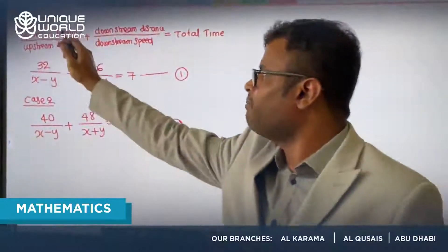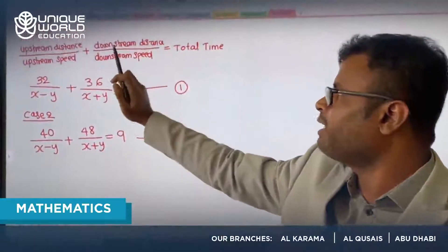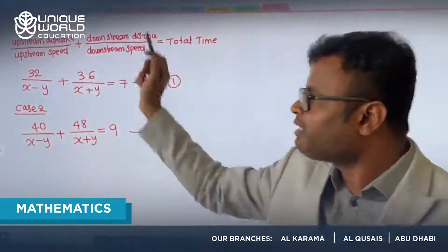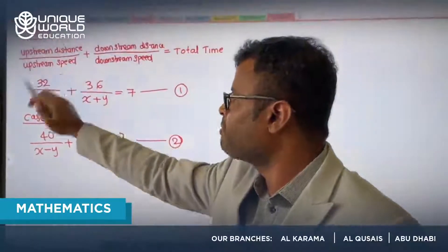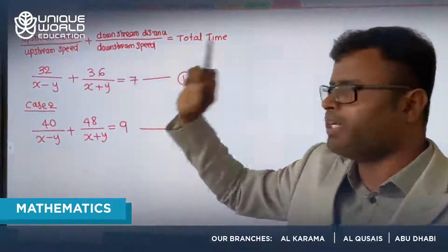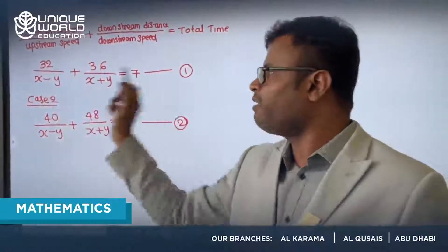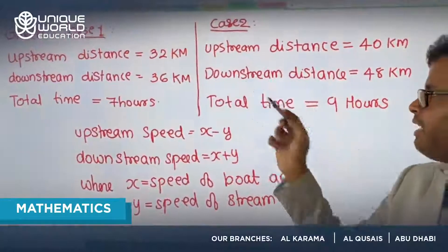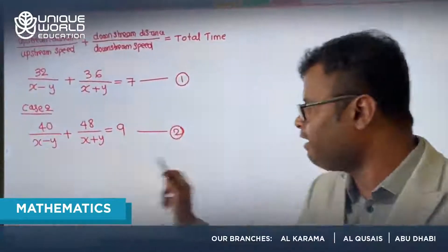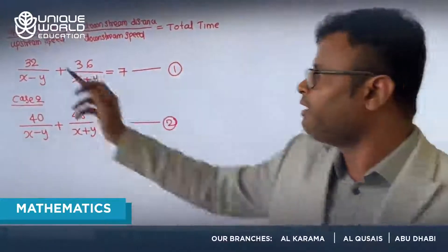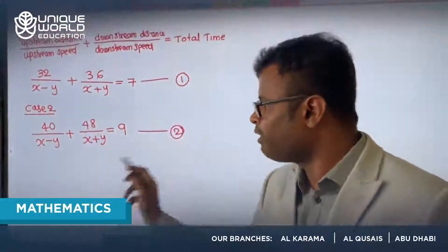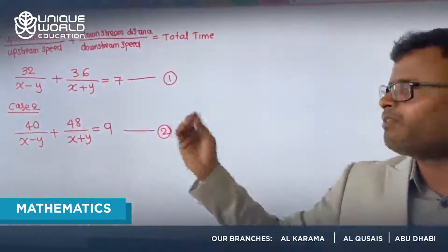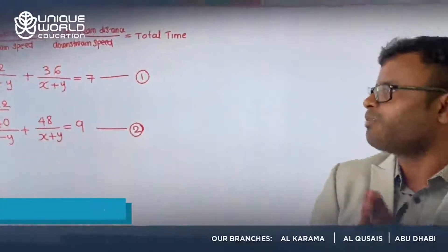We use the formula: upstream distance/upstream speed + downstream distance/downstream speed = total time. Substituting Case 1 values: 32/(x − y) + 36/(x + y) = 7. Similarly for Case 2: 40/(x − y) + 48/(x + y) = 9. We get two equations, and using the methods we already studied for solving linear equations, we can find the values of x and y. That is the explanation for this particular topic.